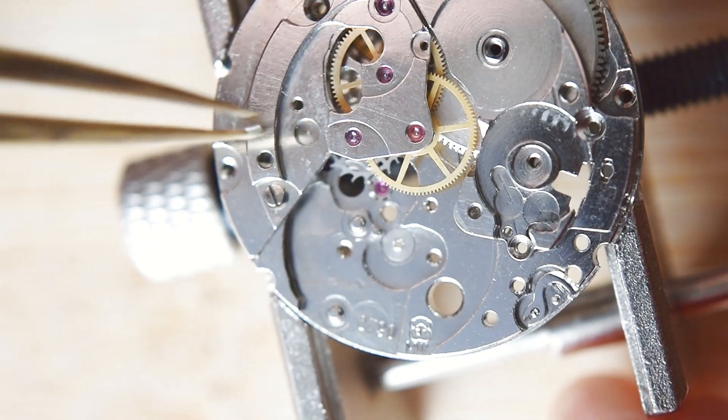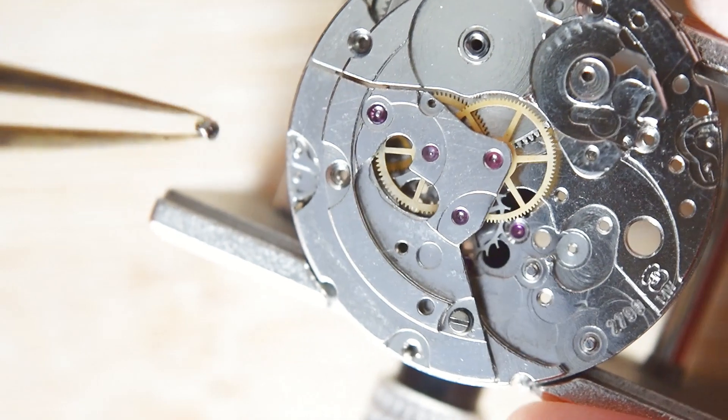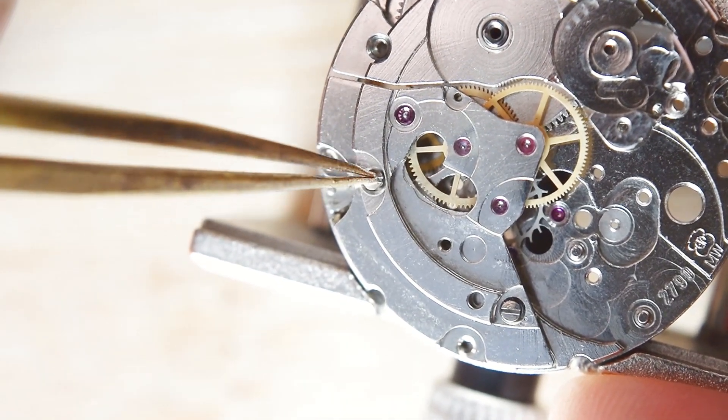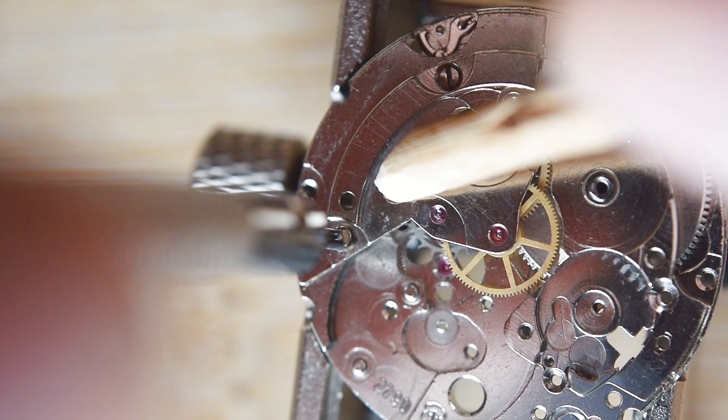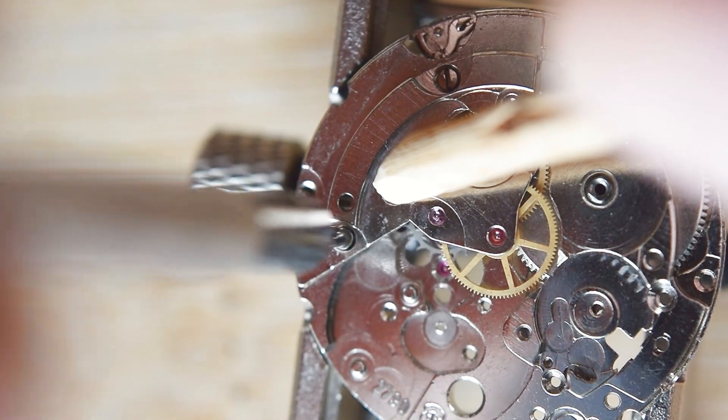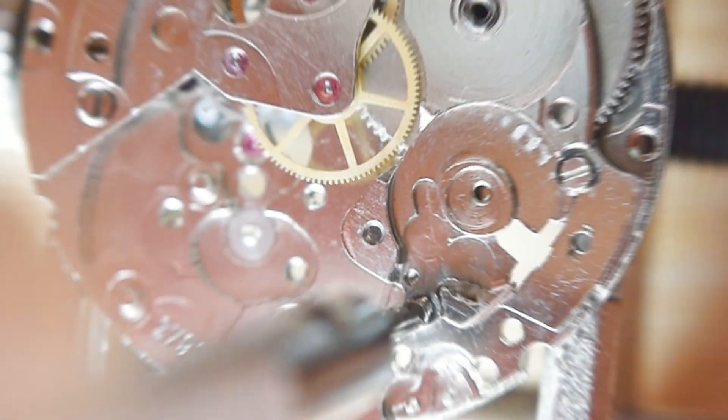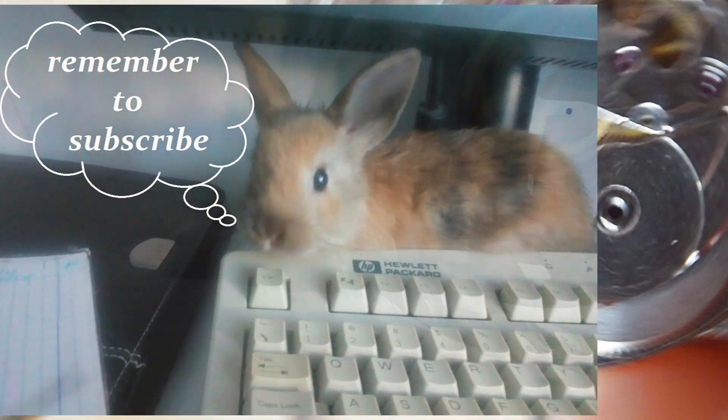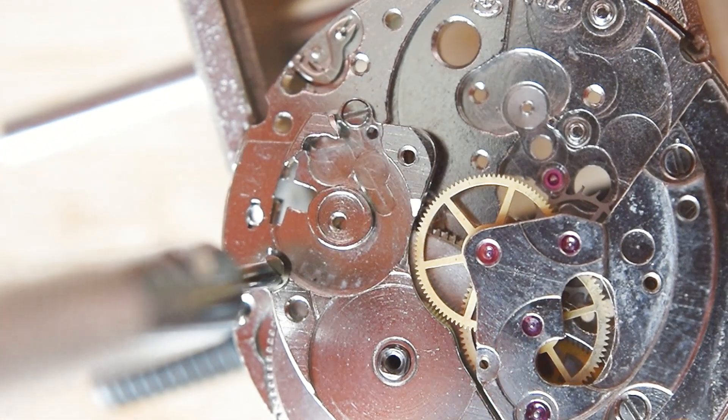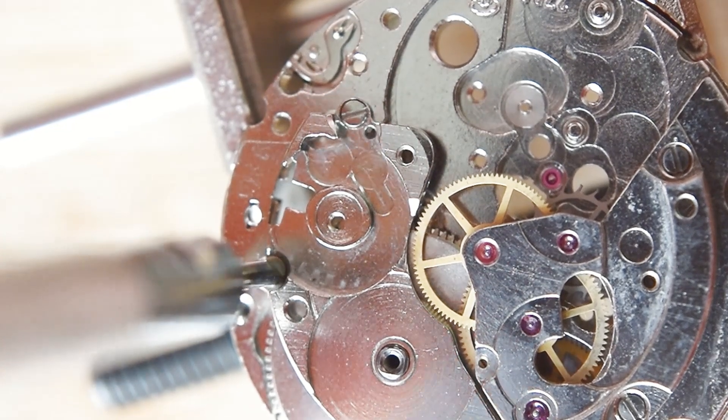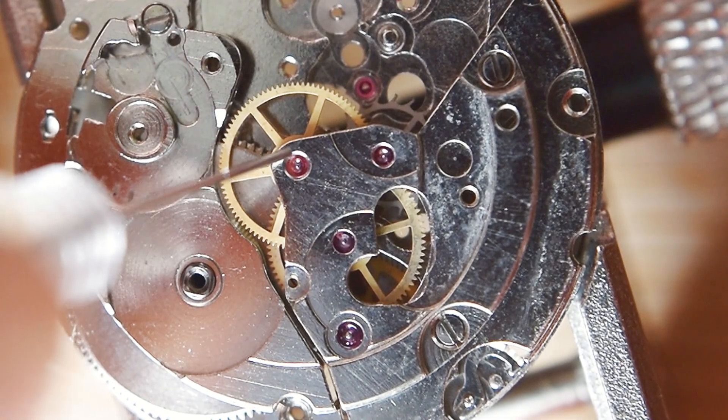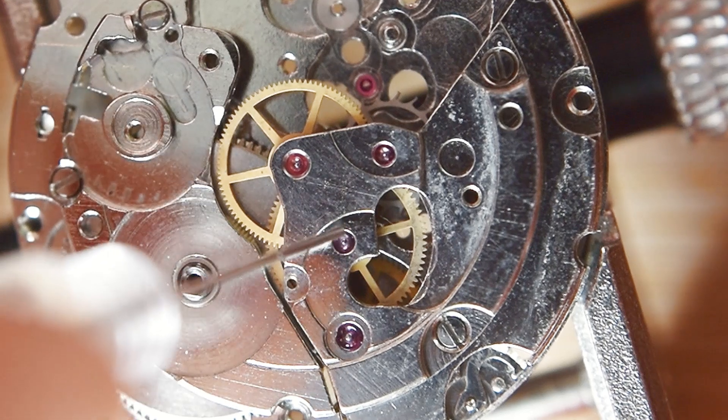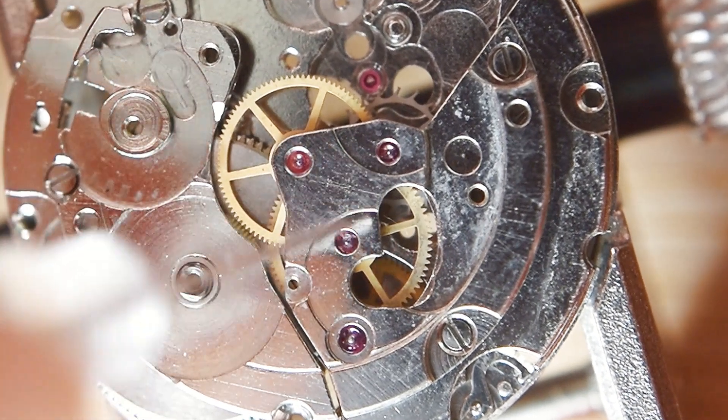Let's come back to our movement. The train wheel bridge is on place, the only thing left is tightening the screws, the first screw and the second one. Here I am tightening the screws of the barrel bridge, but I will have to remove this bridge a little bit later because I forgot the stop second lever.